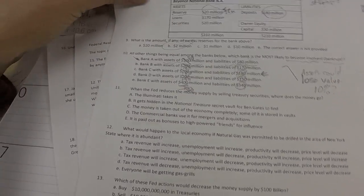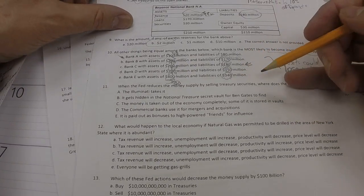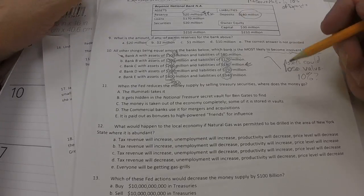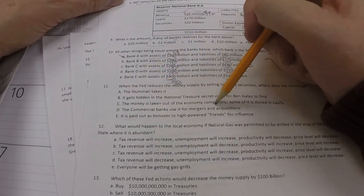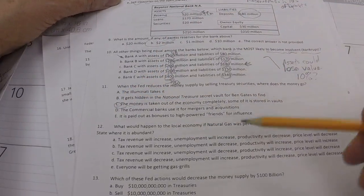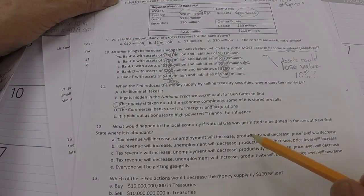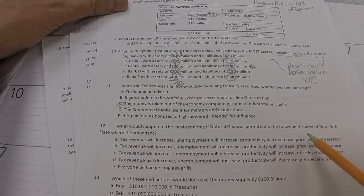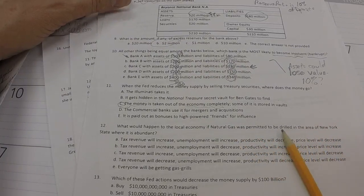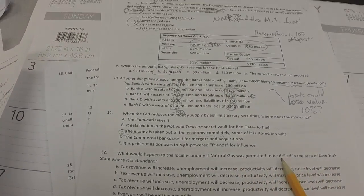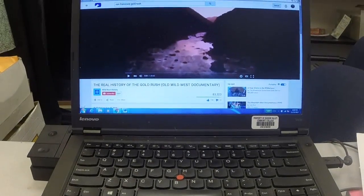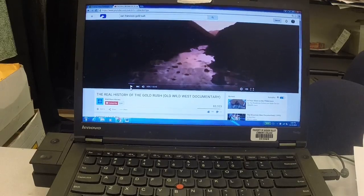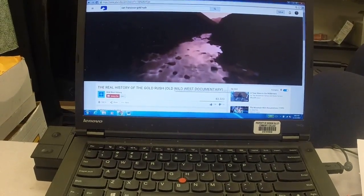Number 11. When the Fed reduces the money supply by selling treasury securities, where does the money go? Answer. The money is taken out of the economy completely. Some of it is stored in vaults. What would happen to the local economy if natural gas was permitted to be drilled in the area of New York State, where it's abundant? Well, for that one, I'm going to just bring over here, because there's a similar question on the test that I might ask you about, and that is about the wild, wild west. That's right. There's a, maybe you're familiar with the gold rush in San Francisco during the 49ers.